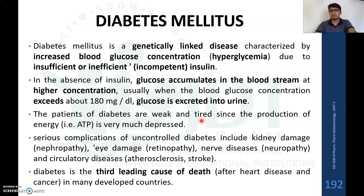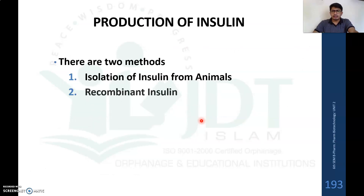Diabetes mellitus is the third leading cause of death in developed countries. This is the importance of producing insulin. Coming to the production of insulin, there are two methods.